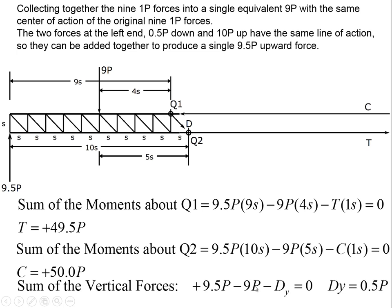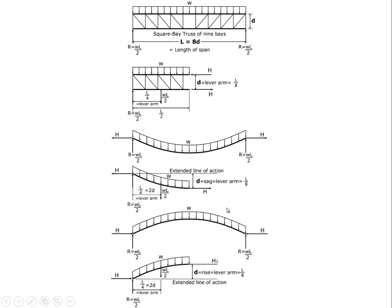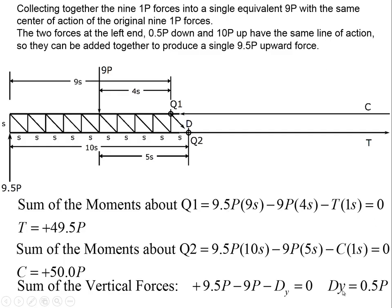Summing all vertical forces: 9.5P upward, minus 9P downward, and the vertical component DY is downward since we drew D down and to the right, so minus DY equals 0. Solving, DY equals plus 0.5P. The positive sign confirms D is in the direction in which we drew it.